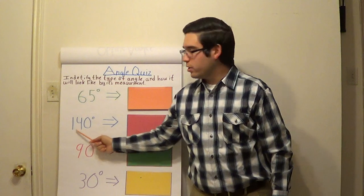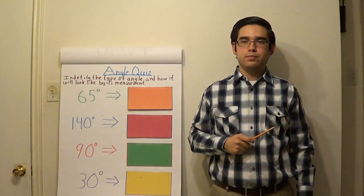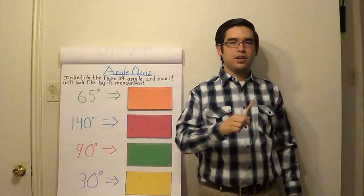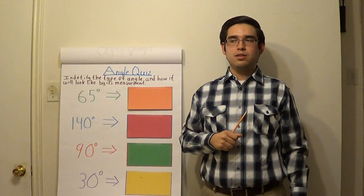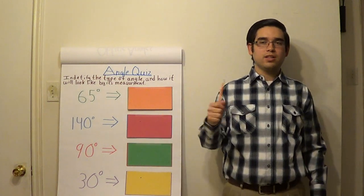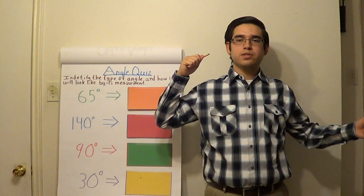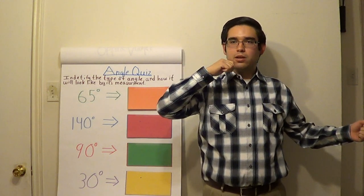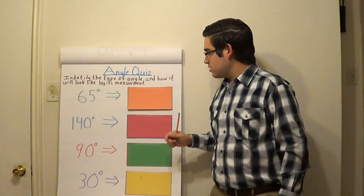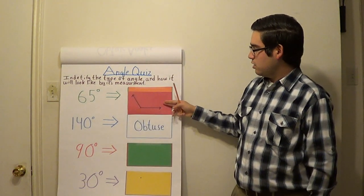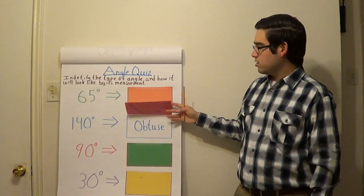Let's consider an angle of 140 degrees. What kind of angle would that be? How would the angle look with your arms? Most of you are saying it would look like this. Let's see — looks like you guys were right again. It is an obtuse angle.